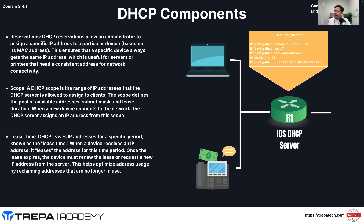A DHCP scope is simply the range of IP addresses the server can assign. For example, a scope of 192.168.0.0/27 covers .0 to .31 — technically .1 to .30 as usable addresses. On a Windows DHCP server you create a pool, give it a name, define the scope, and set the IP address range. The lease time determines how long a device holds its assigned IP address before it must renew; after expiration, the client may receive a new address.